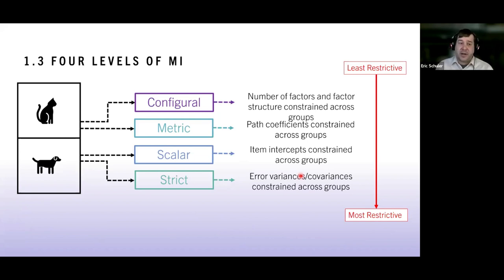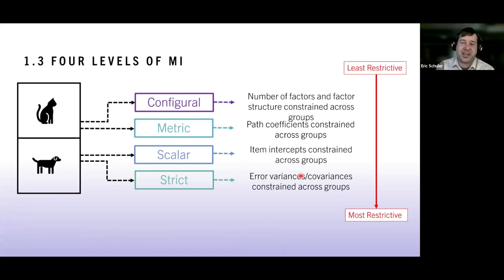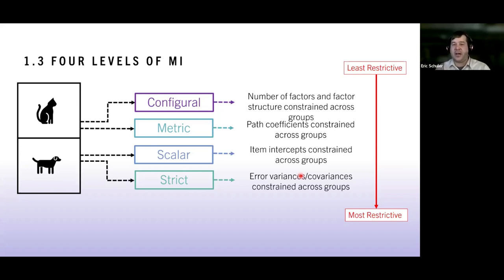Measurement invariance is where I really spend a lot of my personal time — it's a much stronger method. It requires a larger sample size and has more steps. For example, if I want to compare energy levels of a dog and a cat using how much they play with toys as measured variables, but my cat was scared by the ball and doesn't play with it, that difference tells me about the item bias rather than true energy differences.